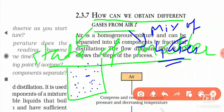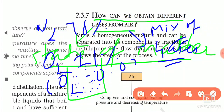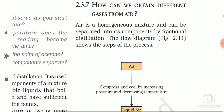For example, nitrogen is 78%, oxygen is 21%, and carbon dioxide is 0.03%, and other gases are also present in the air.